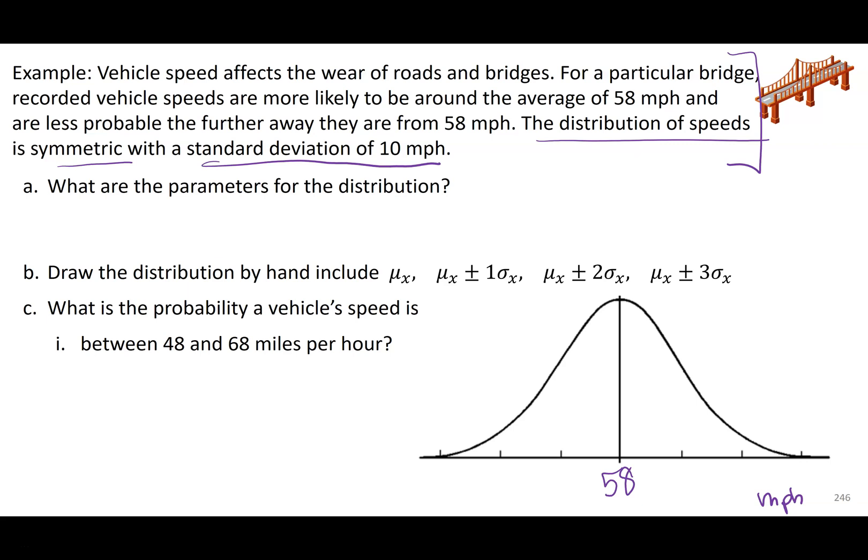Specifically, we're going to assume it's normally distributed. And the distribution of speeds is symmetric with a standard deviation of 10 miles per hour. So my parameters for this distribution, they told us the mean. So x is just speeds of vehicle. So mean of the speeds of vehicles, that's 58 miles per hour. The standard deviation of the speed of vehicles was that 10 miles per hour.